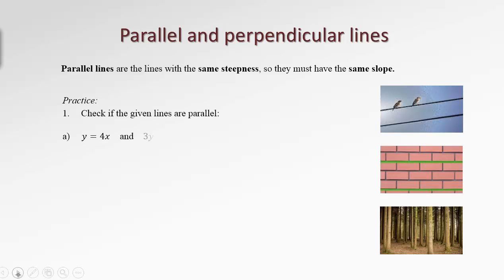How do we recognize if two given equations represent parallel lines or not? Since parallel lines must have the same slope, we just need to compare slopes. What is the slope of the line represented by the first equation? This equation is in slope-intercept form, so it's easy to read the slope — it's just the leading coefficient by x. So the slope for this line is 4.